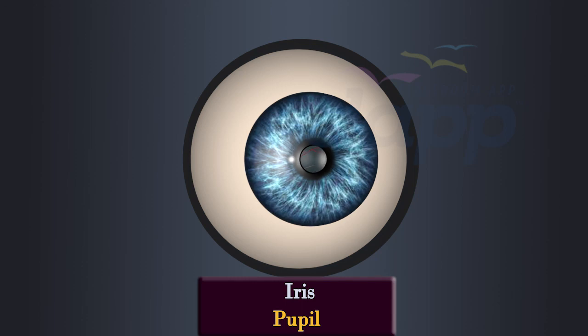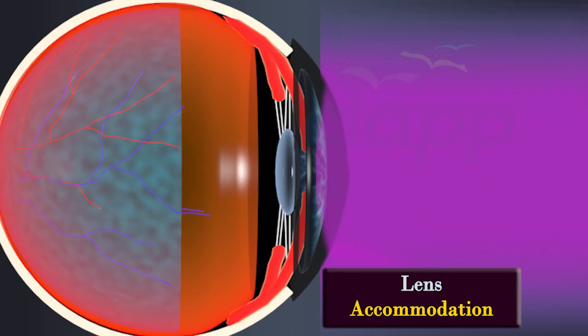In dim light, the iris expands, making the pupil larger to allow more light to enter. After passing through the pupil, the light reaches the lens.